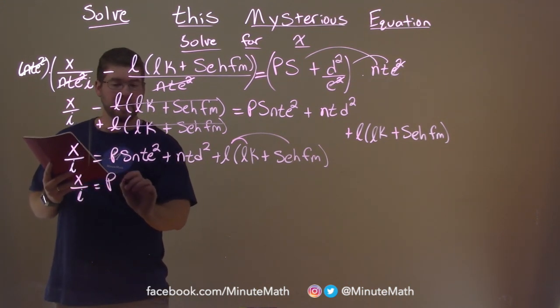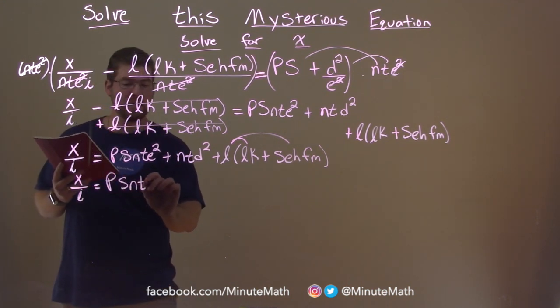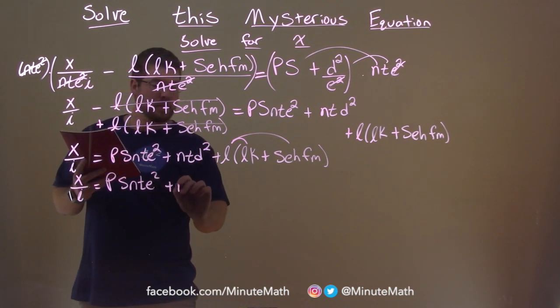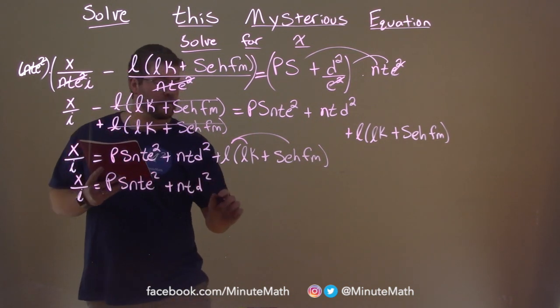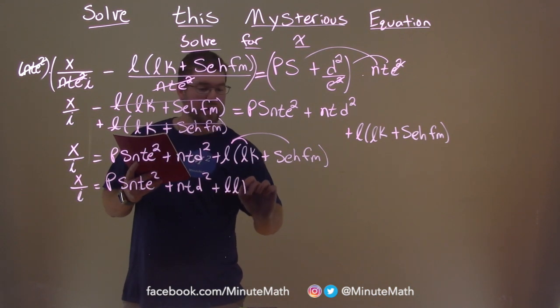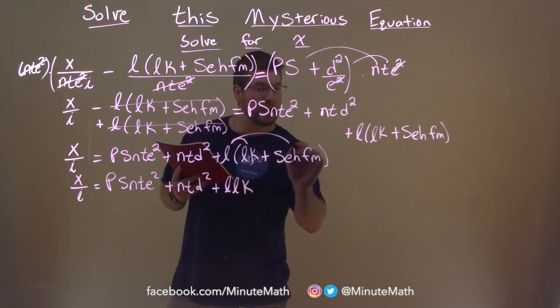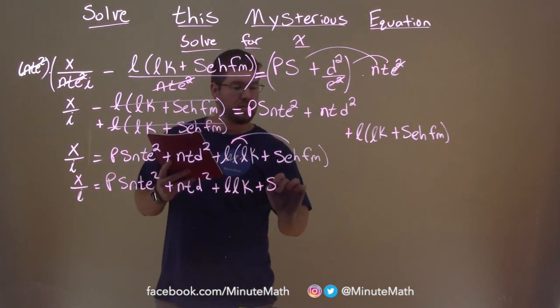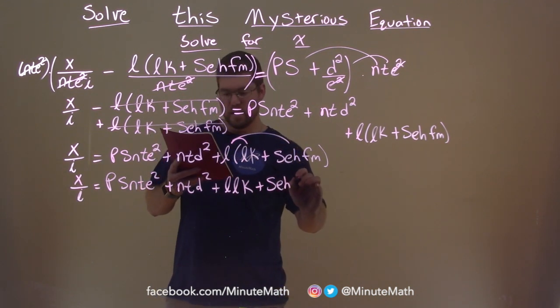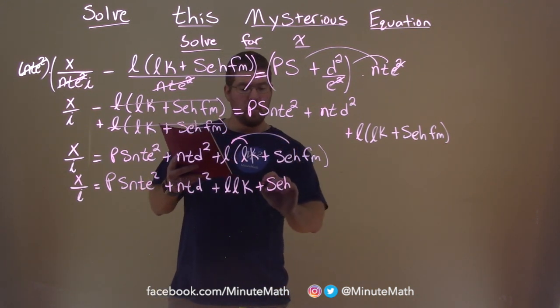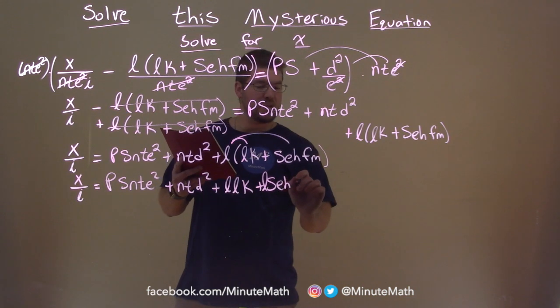And that's equal to p, s, n, t, e squared plus n, t, d squared plus l times lk. And then we distribute the l to the second part plus sehfm.